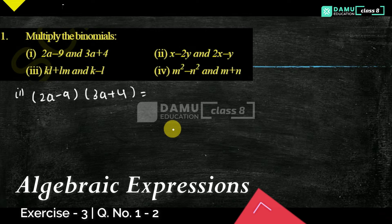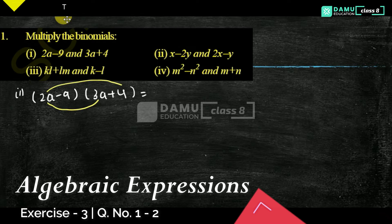So what we have to do here is: multiply the first term with the first term in the second one, and then the first with the second. Again, we need to multiply the second with the first, and again the second with the second. Like that, we have to multiply.